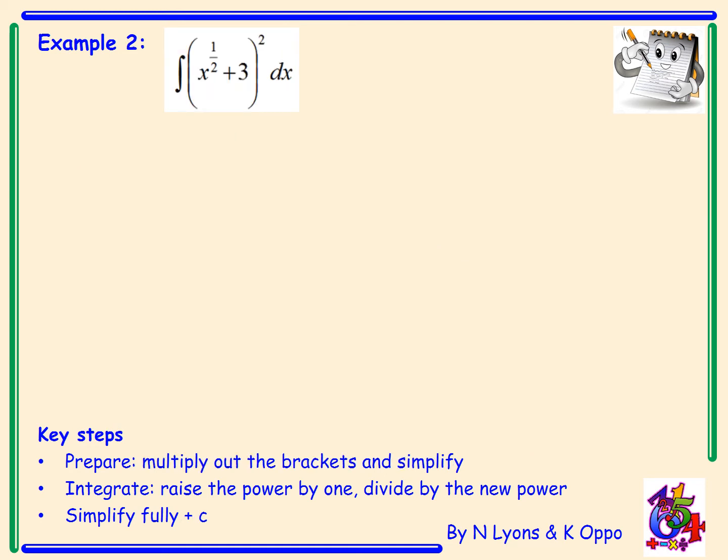Example 2 is a bit more complicated now. I've got the integral of x to the power 1 half plus 3 all squared with respect to x. So to prepare I'm going to have to multiply out the brackets and simplify before I do my basic integration, raising the power by 1 and dividing by the new power, then adding our constant of integration once we've simplified fully.